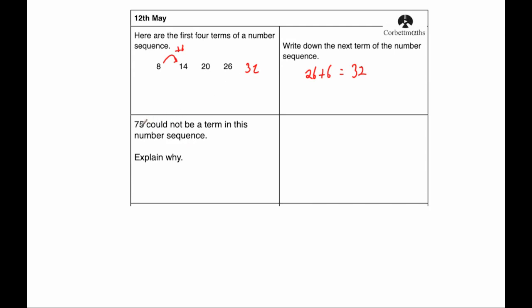And the next question says, 75 could not be a term in this number sequence. Explain why. Well, 75 is odd. And all these numbers are even. So the reason would be all the terms are even.